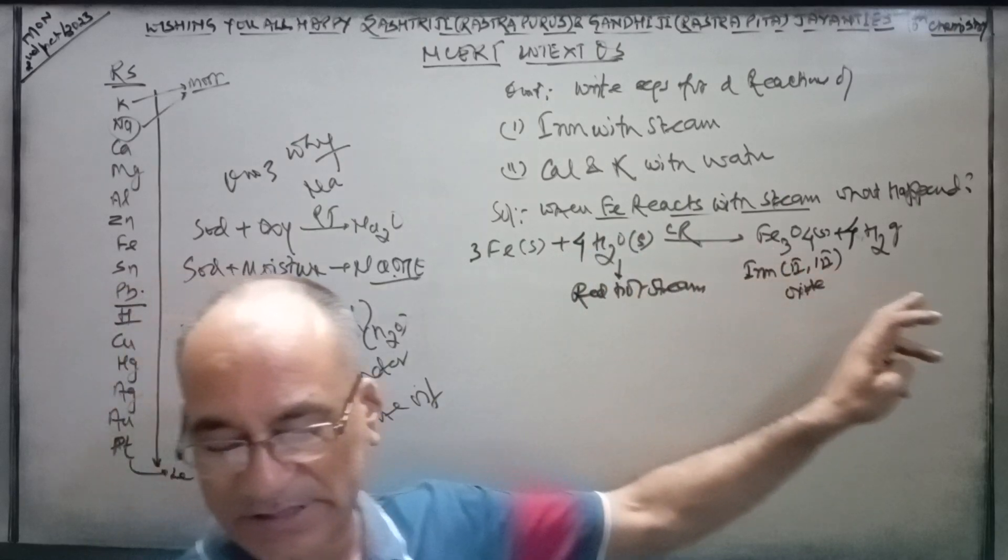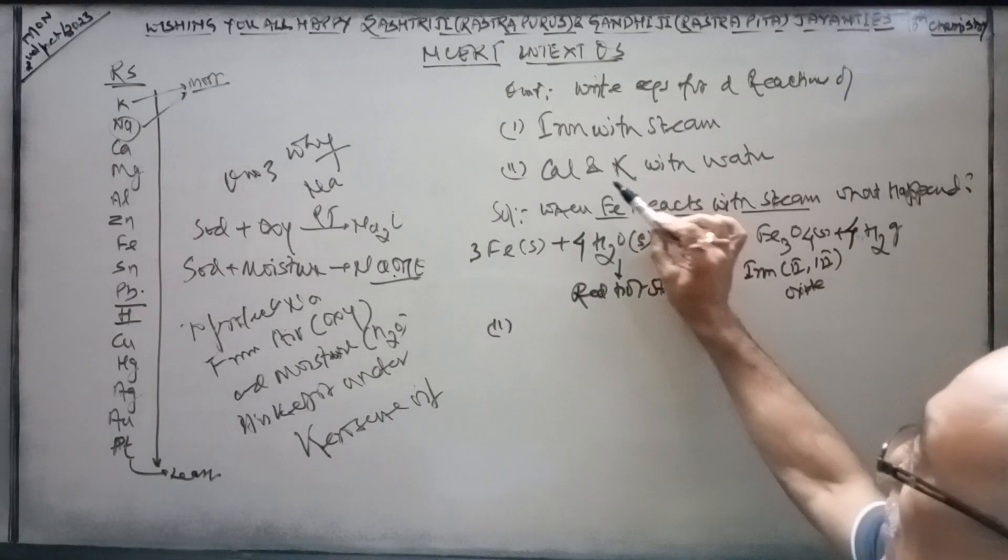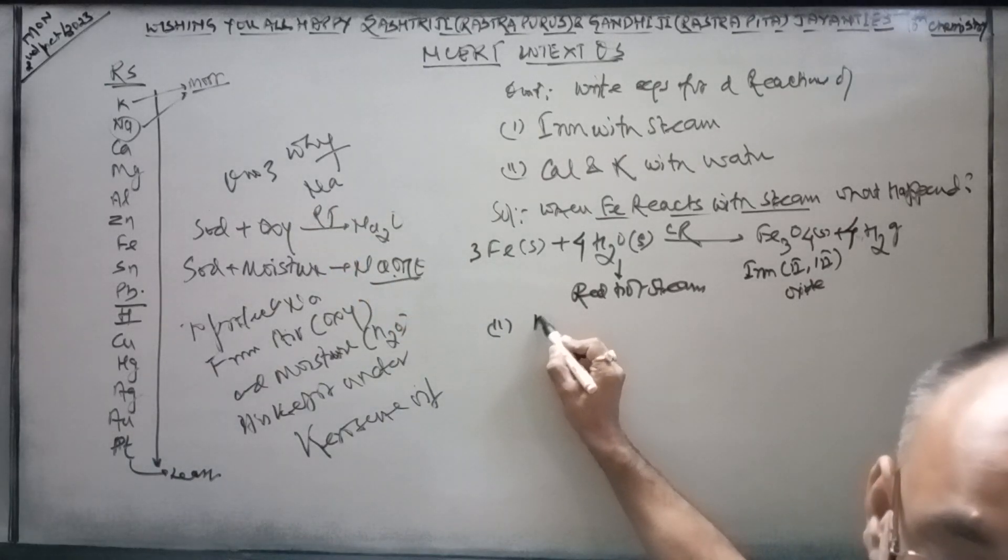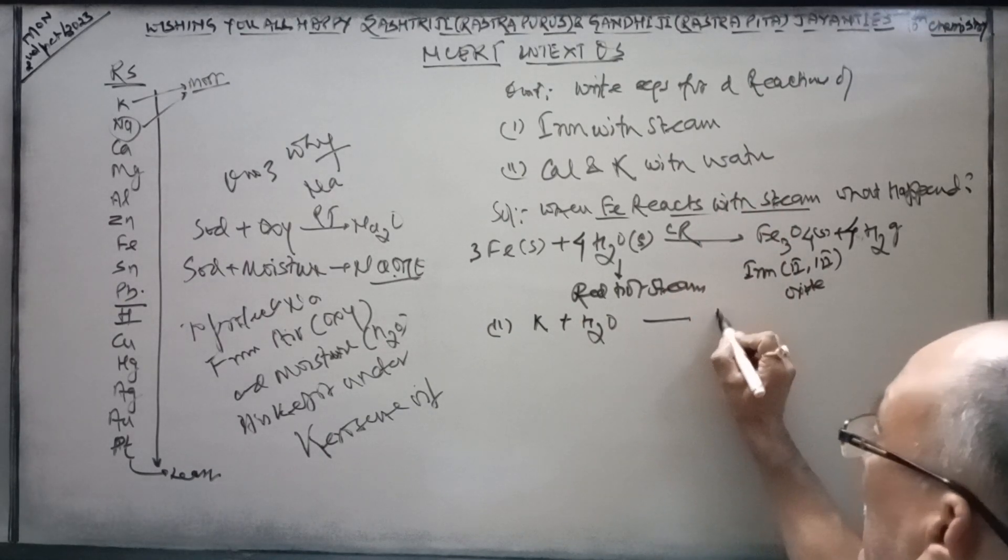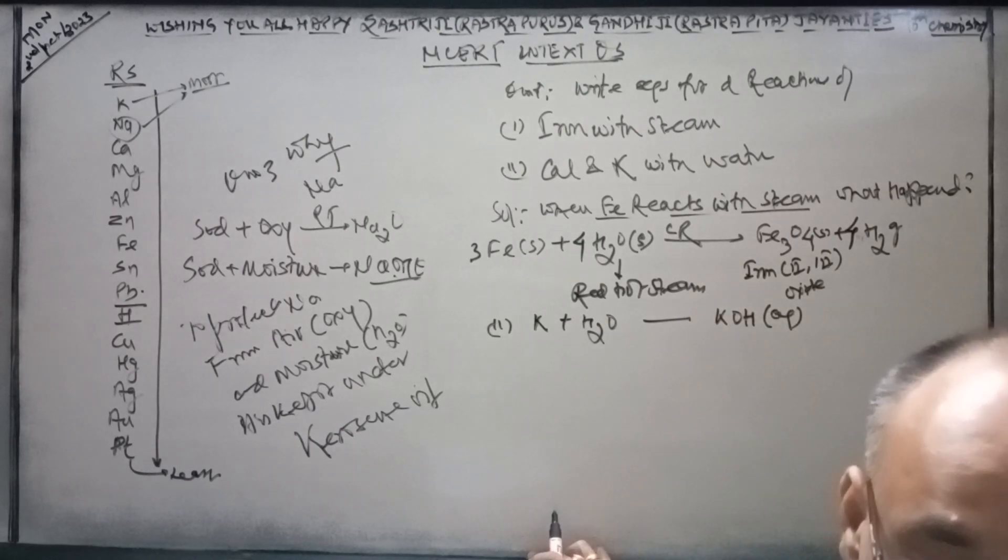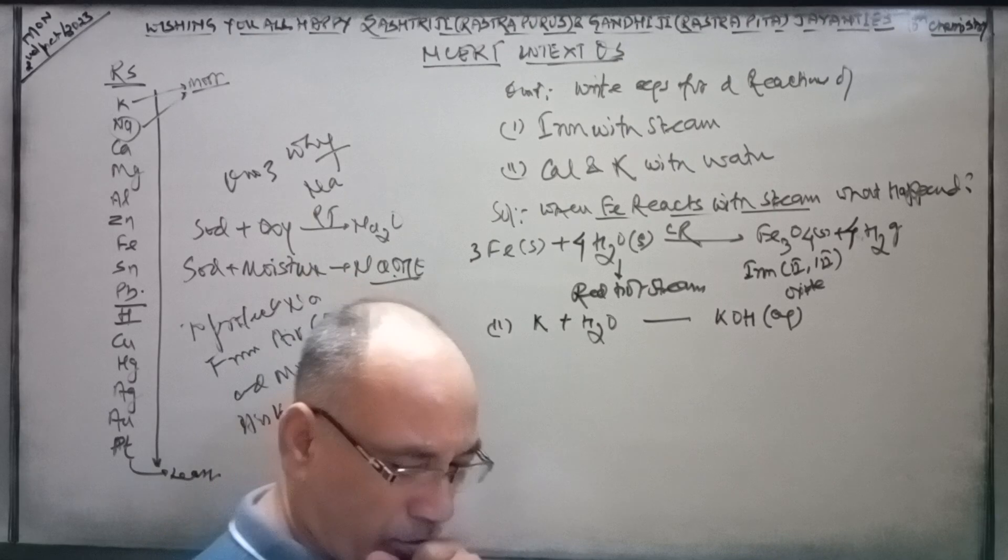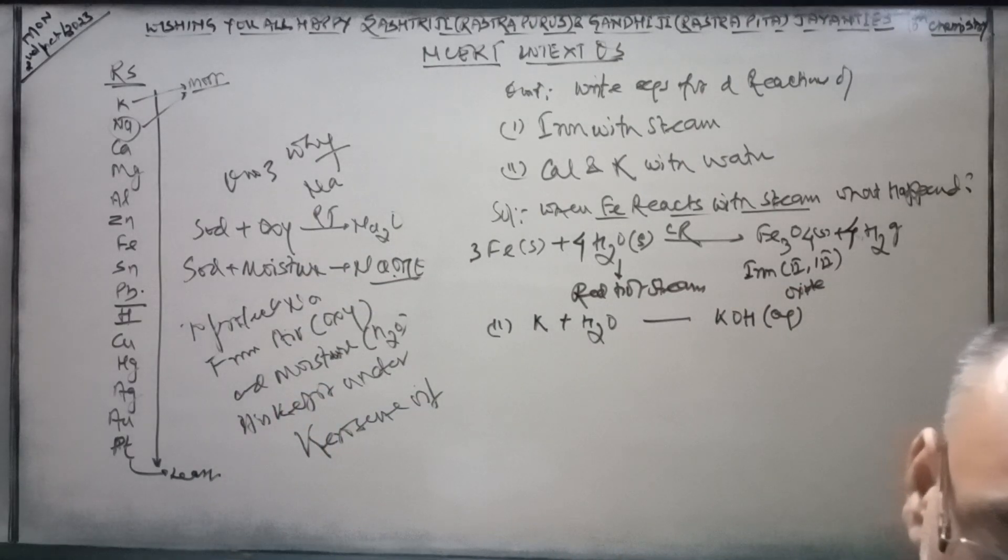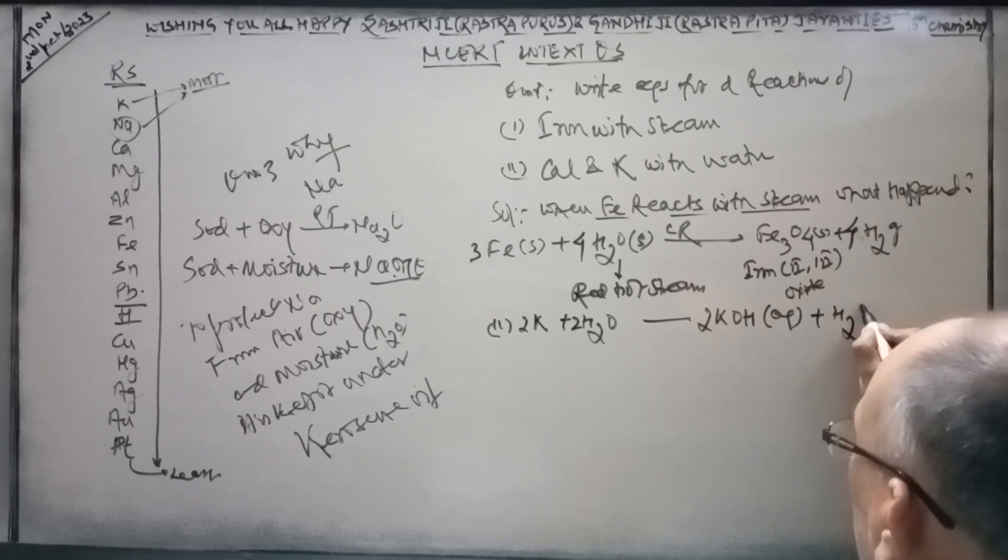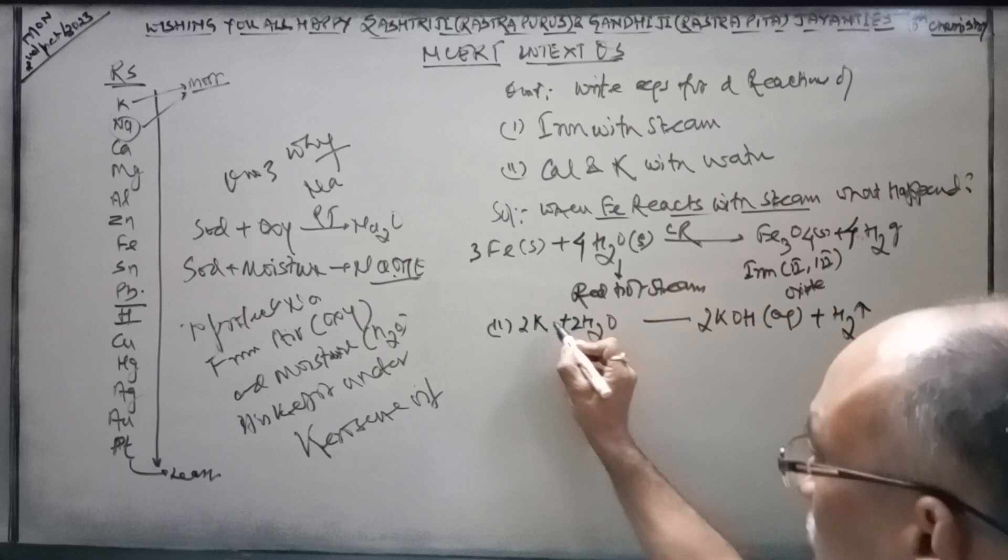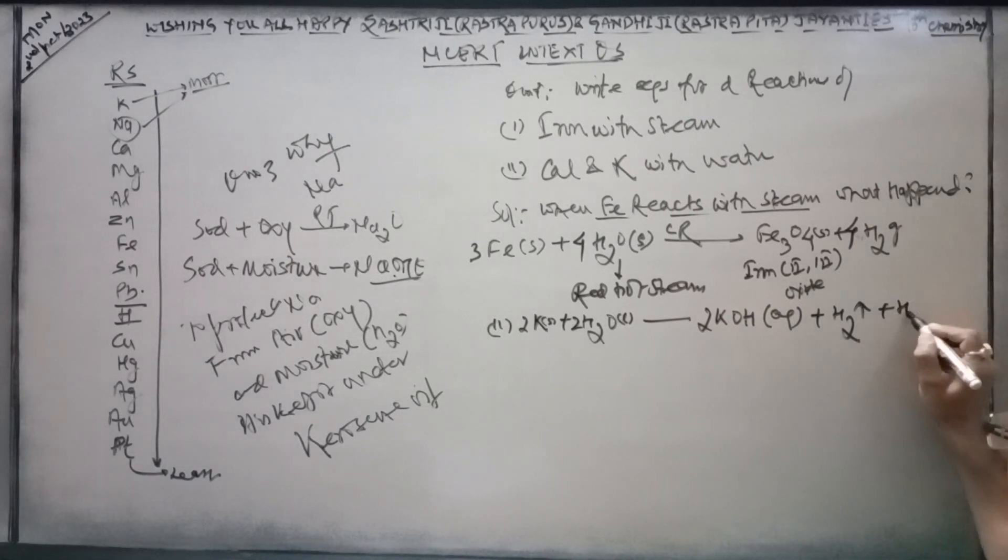We have to balance the equation. On the left side we have 3 Fe, 4 H2O giving 8 hydrogen and 4 oxygen. On the right we have Fe3O4 with 4 oxygen and 4 H2 with 8 hydrogen. The equation is balanced.